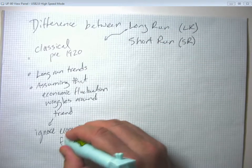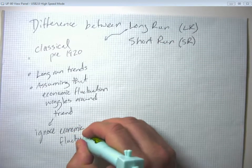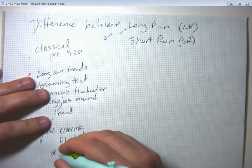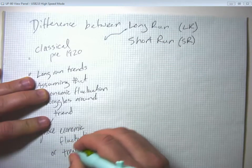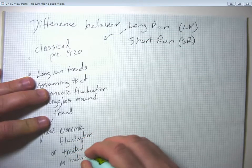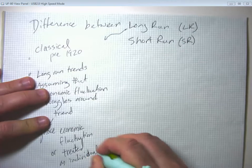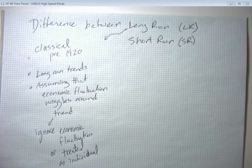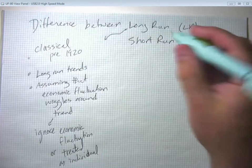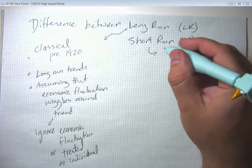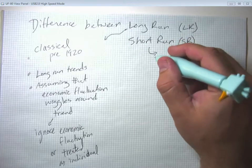Or at least they treated each as its own individual event and said, well, in the long run, all of these economic fluctuations eventually end. So let's not worry too much about explaining them. And people started to not take that as an acceptable answer.